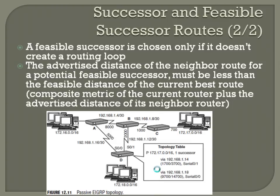Before I jump into this, looking at this network right here, you've got your route here to this 172.17.0.0 network. This is this guy right here — you're coming from Router D. The 192.168.1.14, that's this link right here. You're .13, this is .14, so .14 is your next hop.